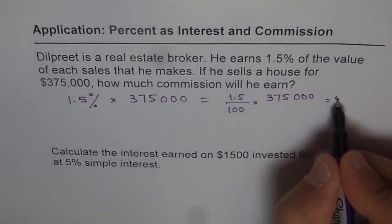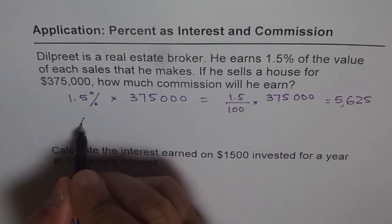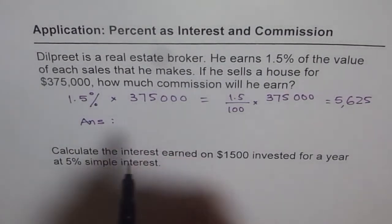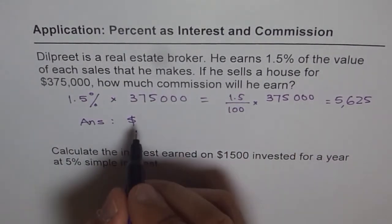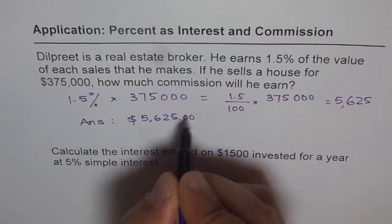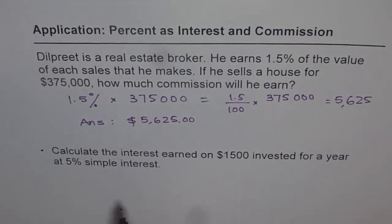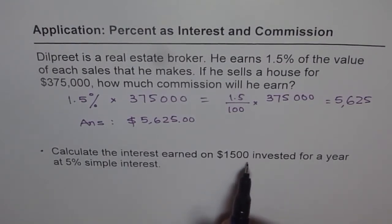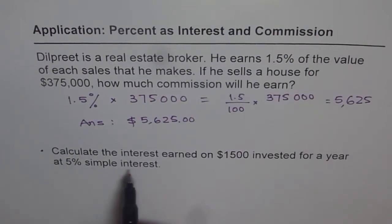The answer is $5,625. So we write down the answer: he earns a commission of $5,625. Now here is another question of a similar kind: calculate the interest earned on $1,500 invested for a year at 5% simple interest.